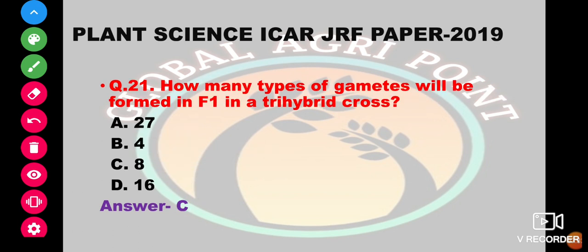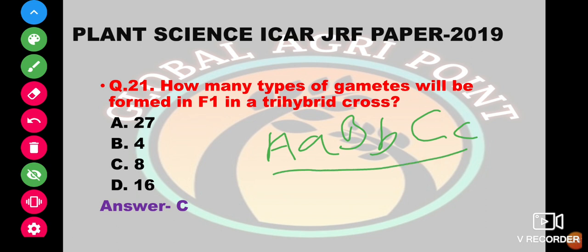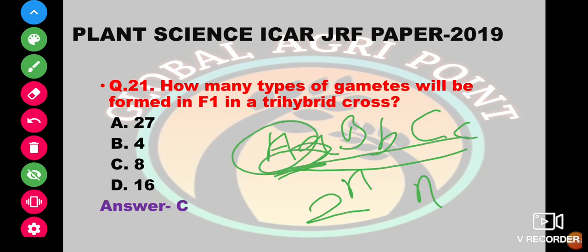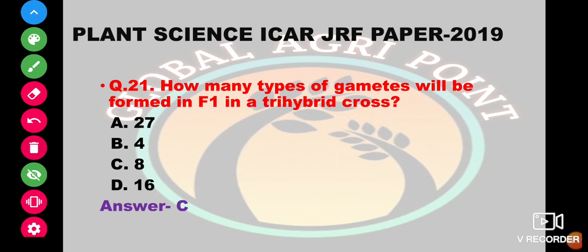How many types of gametes will be formed in F1 of a trihybrid cross? In a trihybrid, the number of gametes is 2^n where n is the number of heterozygous loci. Here n equals 3, so 2^3 equals 8. The options are 27, 4, 8, or 16. The answer is 8.